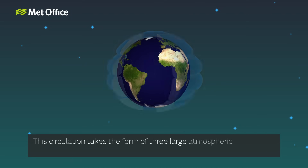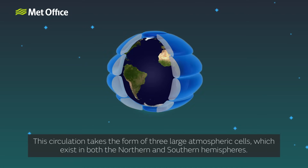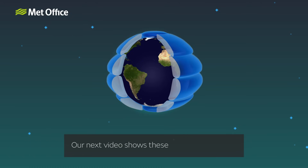This circulation takes the form of three large atmospheric cells, which exist in both northern and southern hemispheres. Our next video shows these cells in more detail.